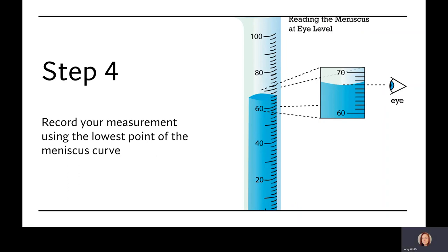The fourth step is to take the liquid measurement at the very bottom of the dip in the surface of the liquid. This dip is called the meniscus. It forms because the liquid molecules are more attracted to the glass or plastic than they are to each other.